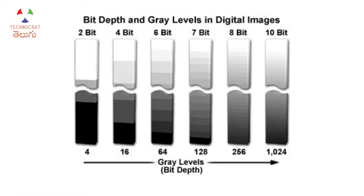If we have 0, we have complete dark. If we have 255, we have complete white. If we have 127, we have 50% black and 50% white — a mid-scale gray. We have all the gray scale levels of gray scale.